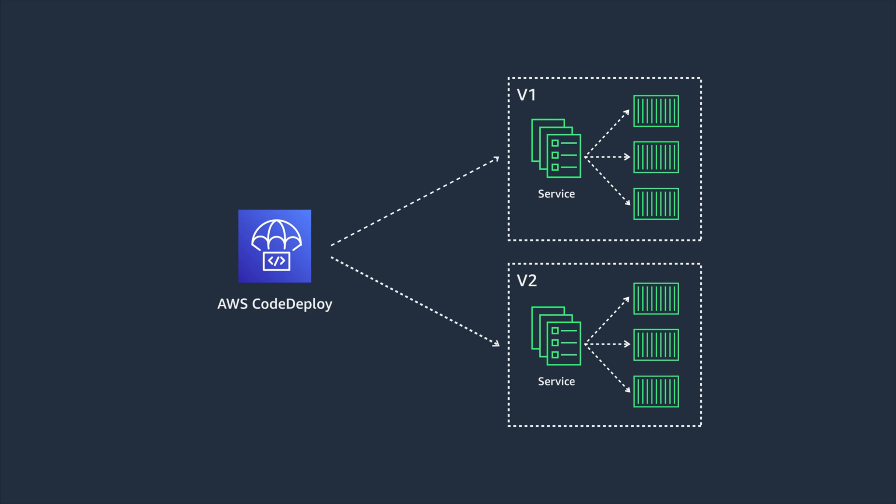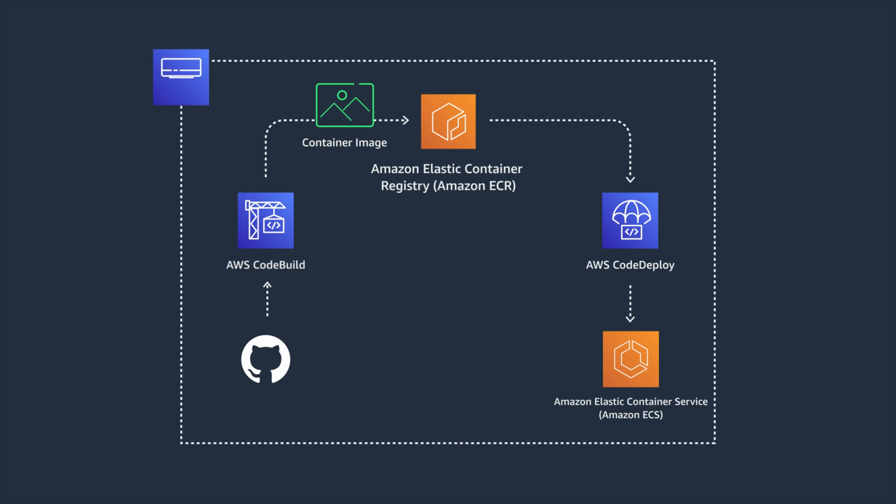And I really want this whole process to trigger automatically every time I make a code change. With AWS CodePipeline, I'm able to create a continuous integration and deployment pipeline, which starts every time a change is made in source code, and it coordinates the execution of steps required to complete the deployment of a new version of my container.